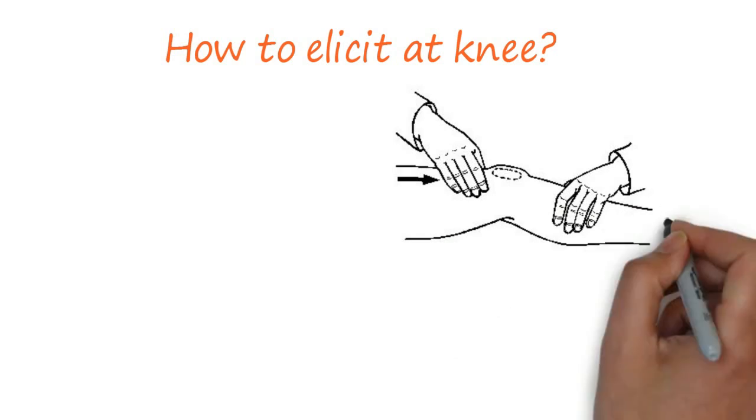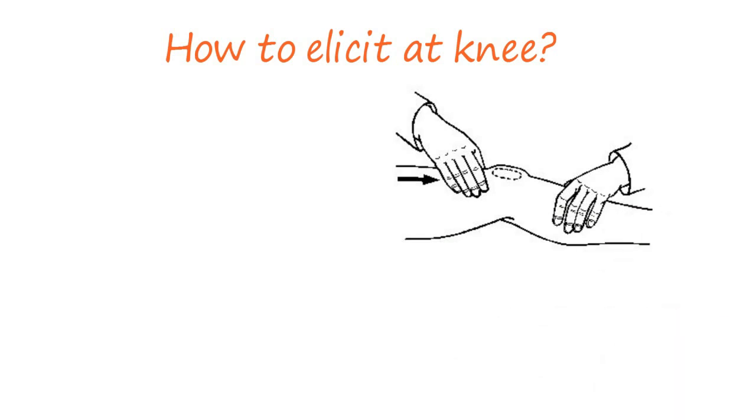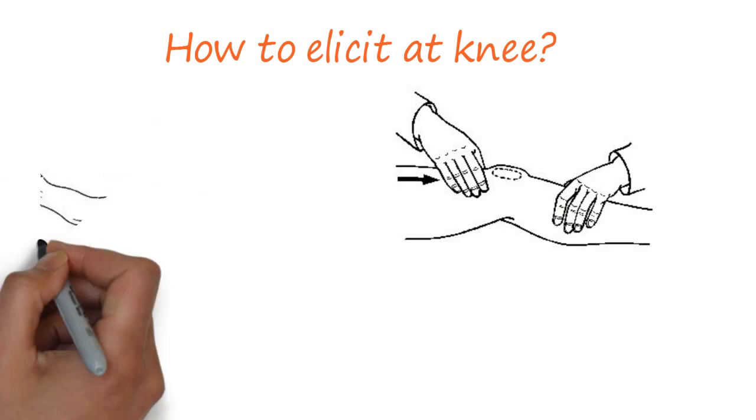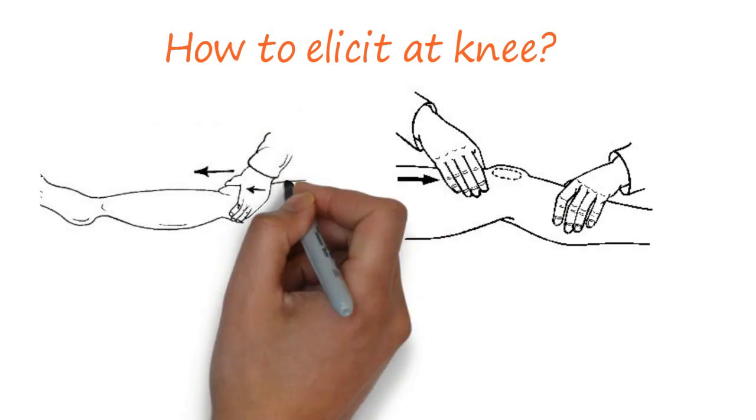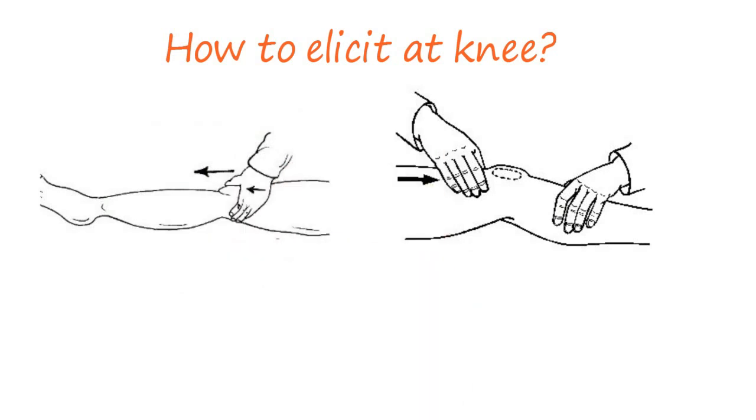Then, the patella is briskly moved distally using the examiner's fingers and light pressure is maintained in the distal direction. Each beat of the clonus will be felt as a proximal movement of the patella followed by relaxation.